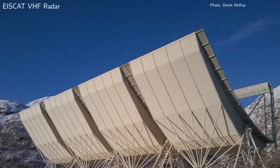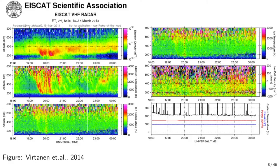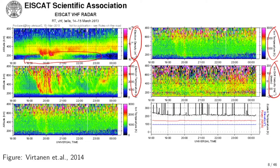I will now show an example of ionospheric plasma parameters derived from the ion line portion of the incoherent scatter spectrum. The observation is made using the EISCAT VHF radar in Tromsø. The plots show the standard derived data products: electron density, electron temperature, ion temperature, and ion velocity, as a function of altitude and time. This specific measurement shows auroral precipitation, indicated by enhanced electron density at lower altitudes. The plot on the lower right shows other parameters such as radar pointing direction, transmit power, and system noise temperature as a function of time.